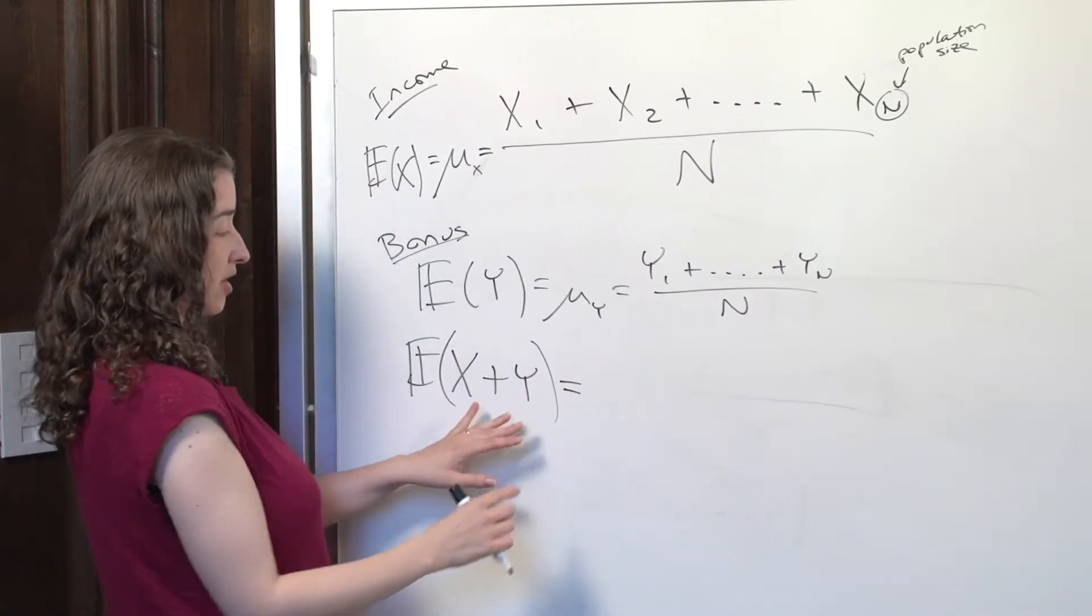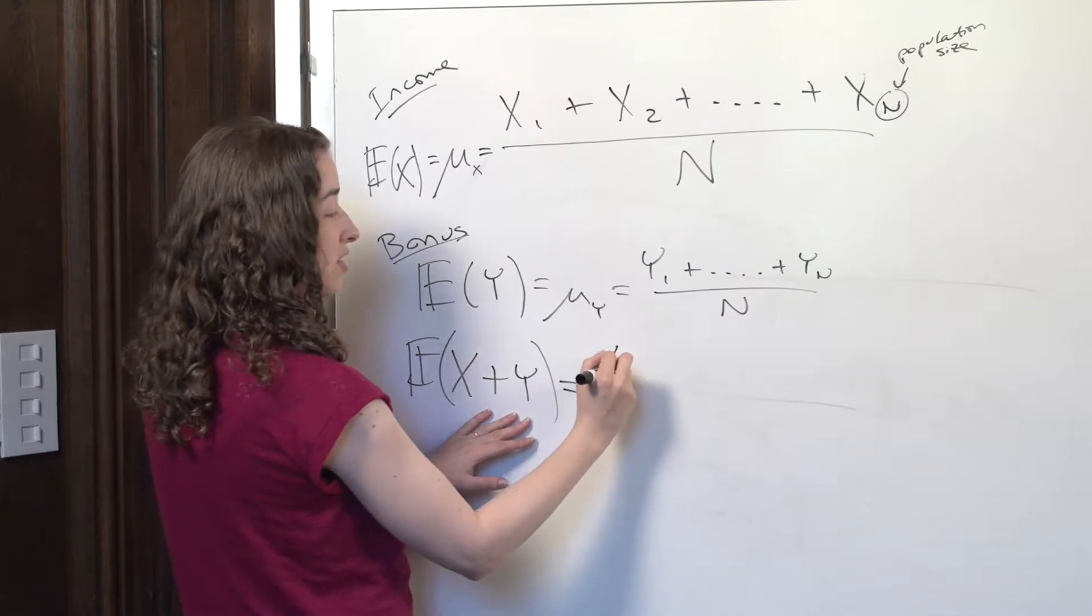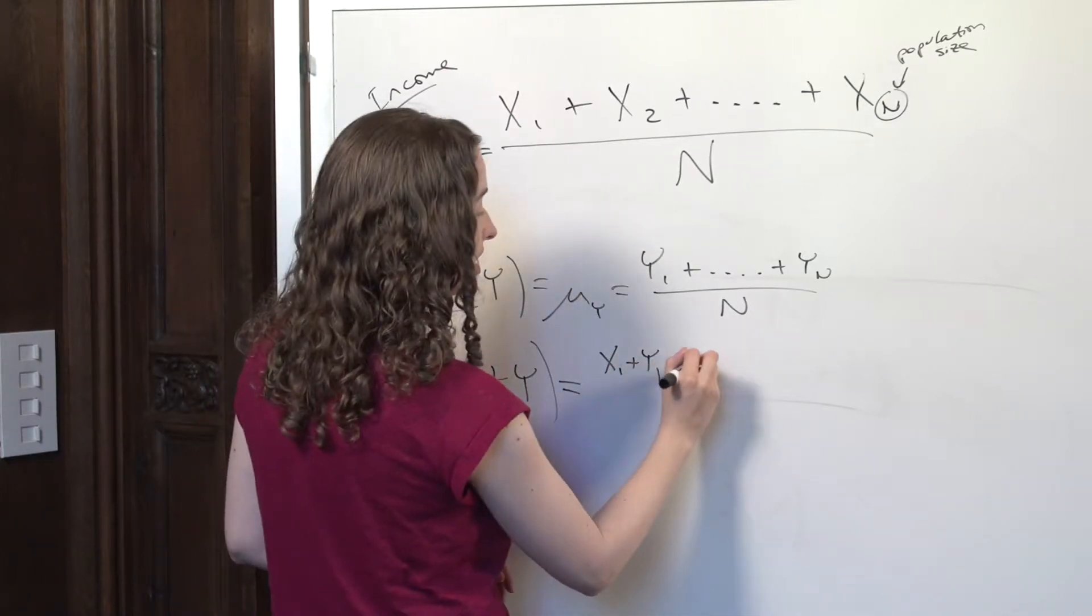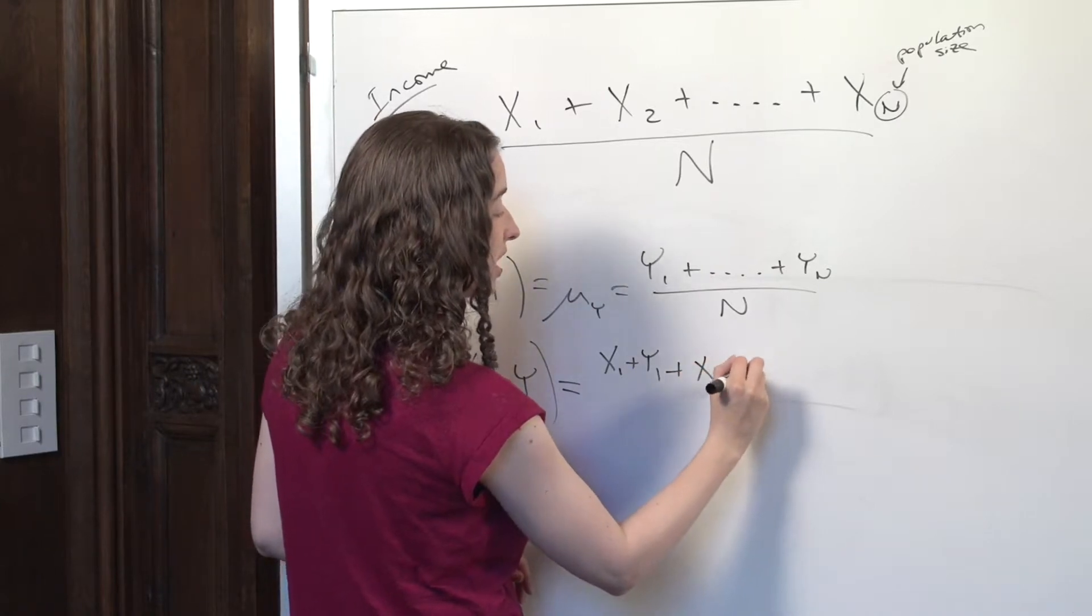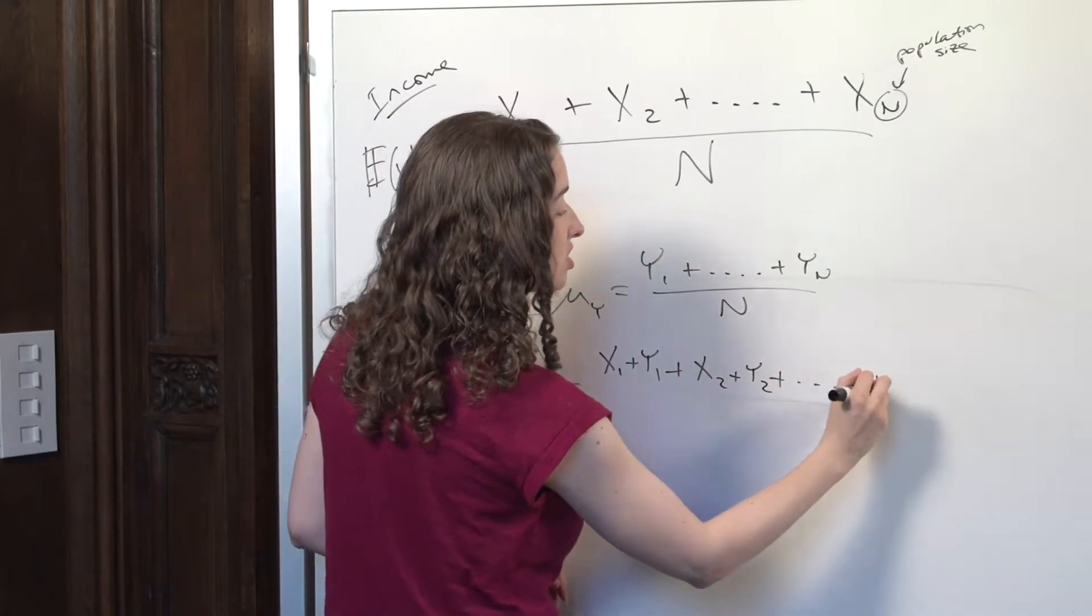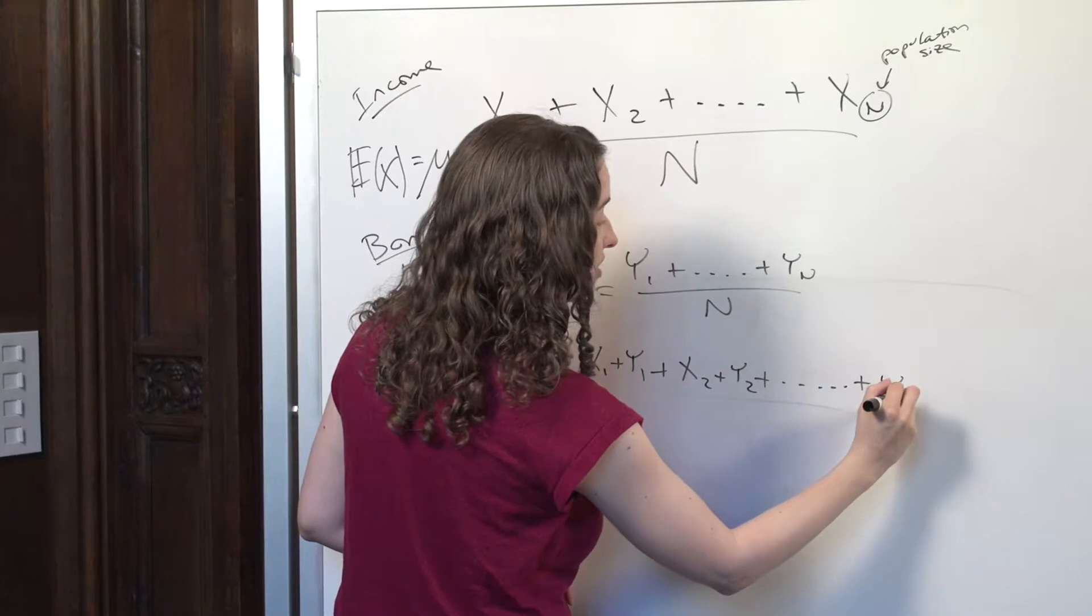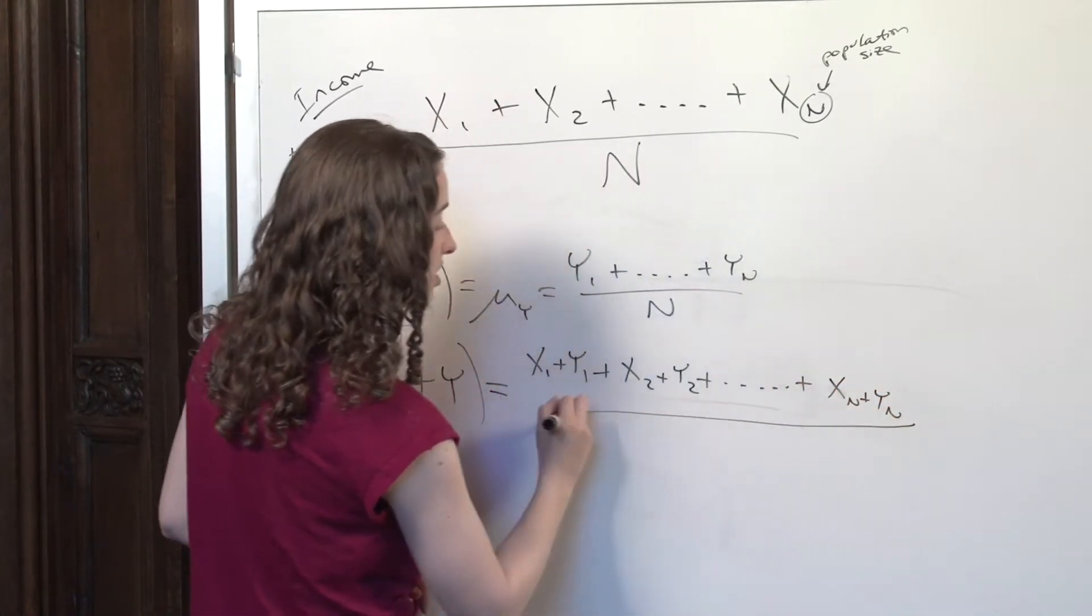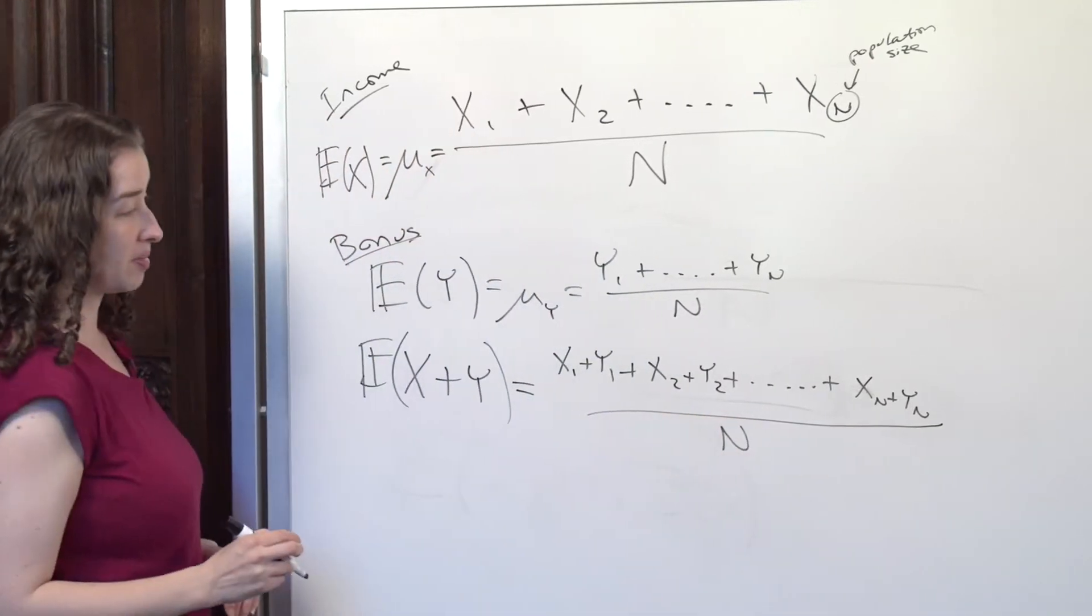Well, let's use the expectation operator. What do we do? We take the value of X plus Y for the first person in the population, plus the value of X plus Y for the second person in the population, et cetera, all the way up to the value of X plus Y for the last person in the population, and divide by the number of people in the population.